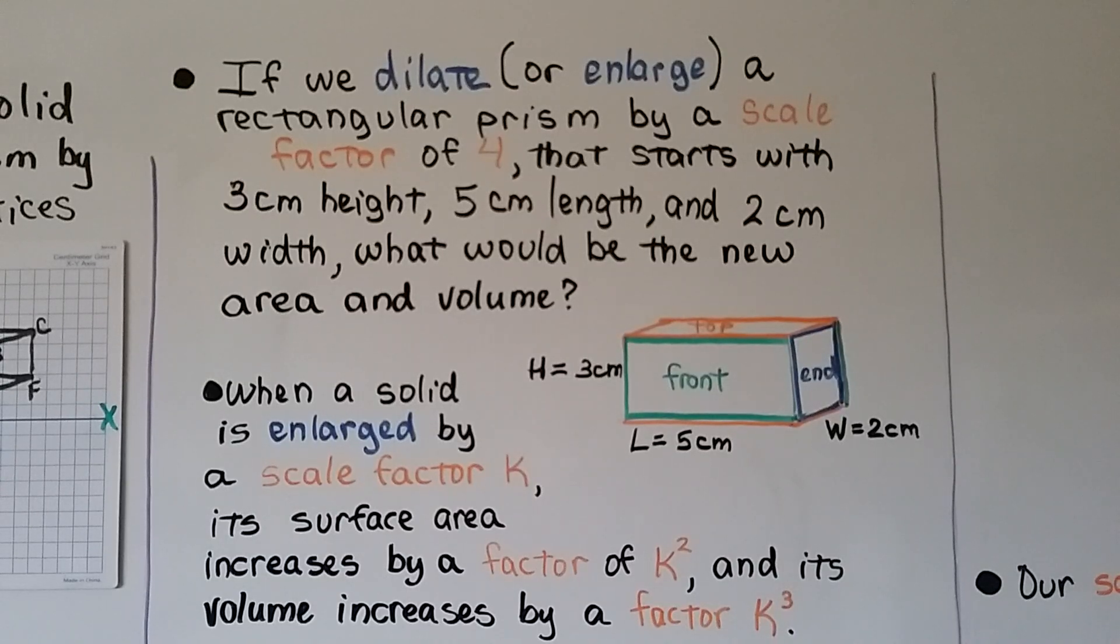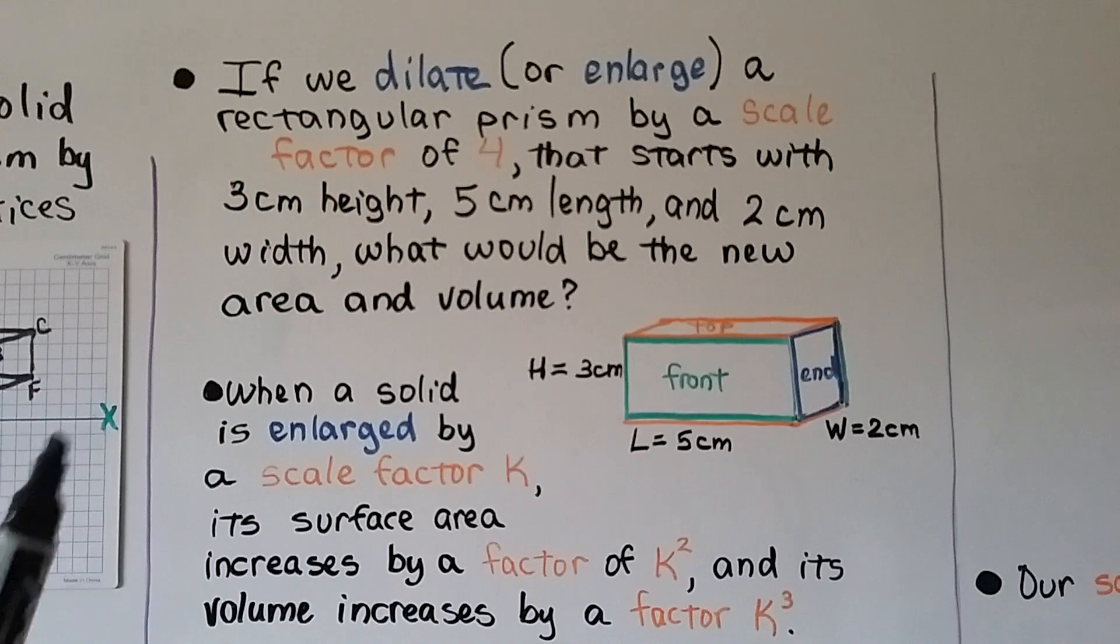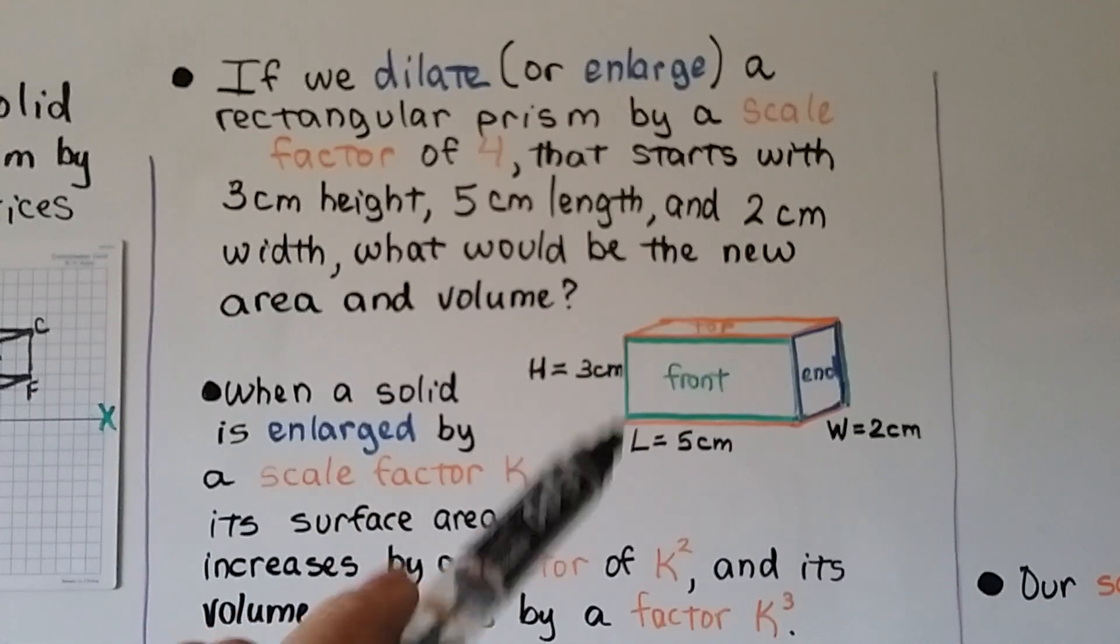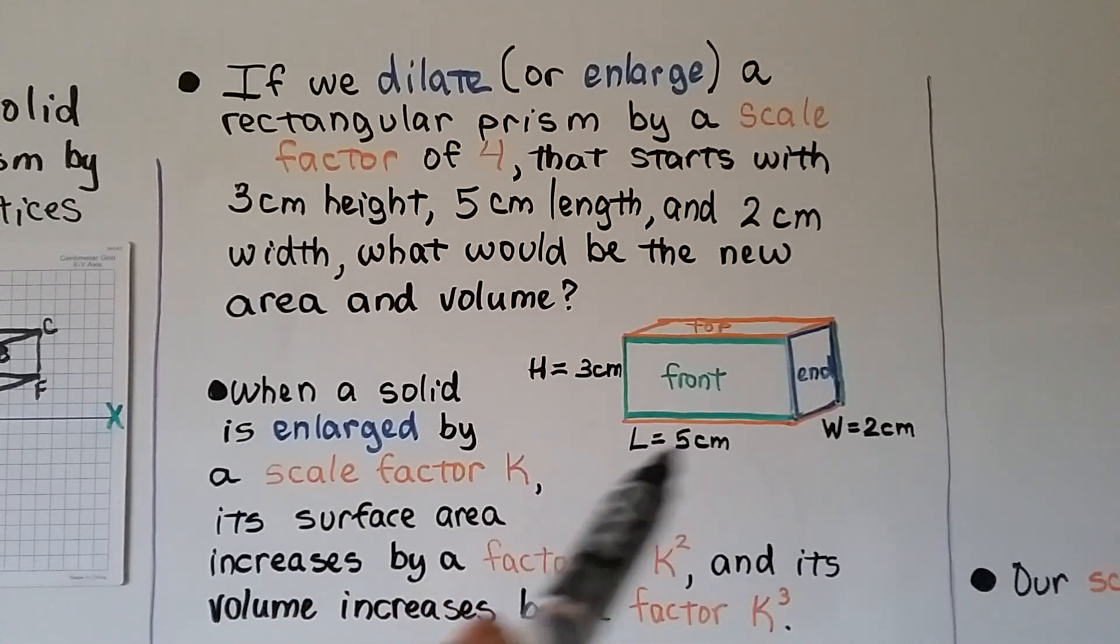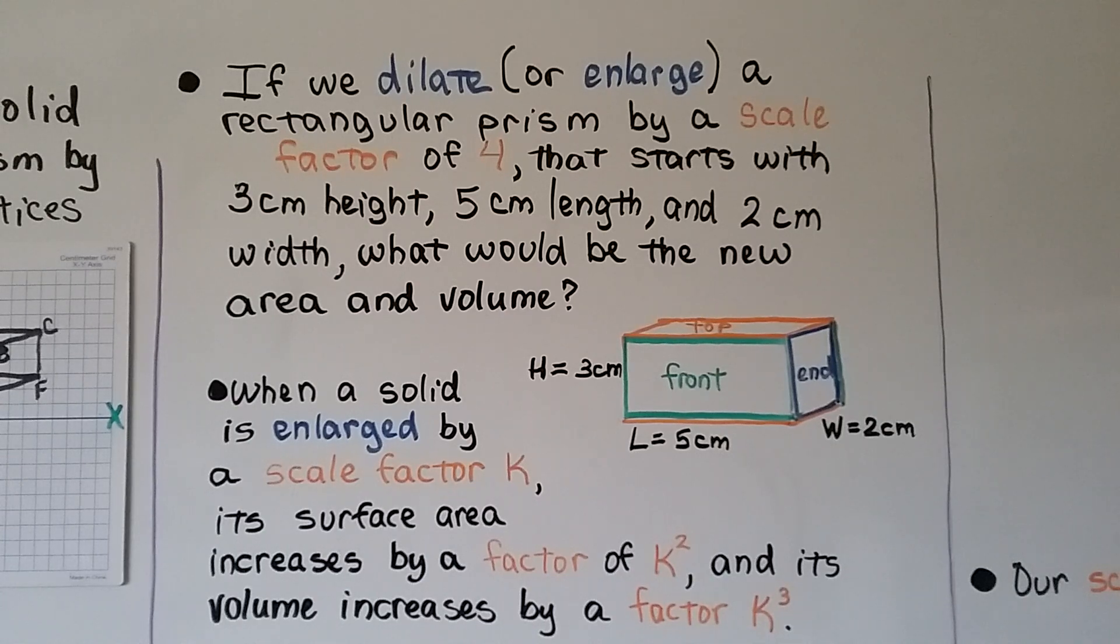If we dilate or enlarge, make an enlargement, a rectangular prism with a scale factor of 4 that starts with a 3 centimeter height, a 5 centimeter length, and a 2 centimeter width, what would be the new area and volume? Well, when a solid is enlarged by a scale factor k, its surface area increases by a factor of k squared, and its volume increases by a factor of k cubed.